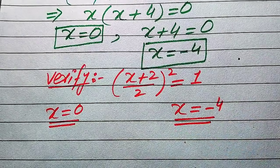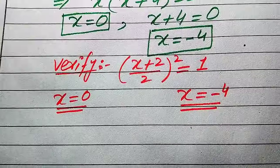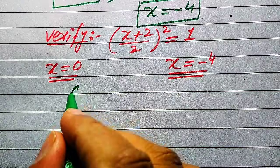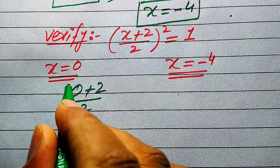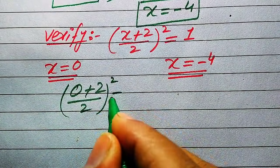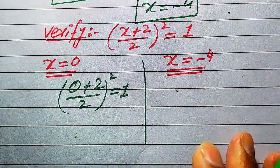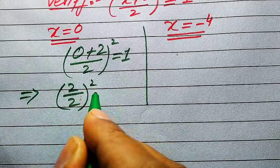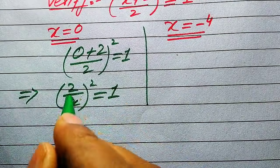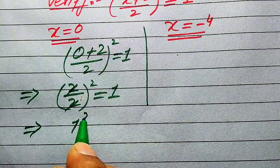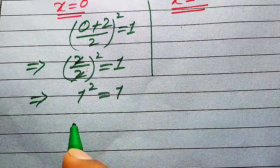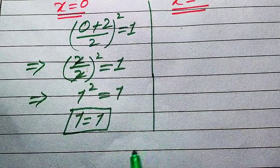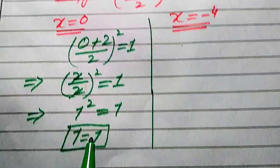First we verify x = 0. Substituting into the left hand side: (0 + 2) / 2, whole squared equals 1. This gives (2/2)² = 1², and the 2s cancel, so we get 1² = 1, which gives 1 = 1. Both sides are equal, so x = 0 satisfies the equation.